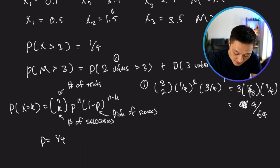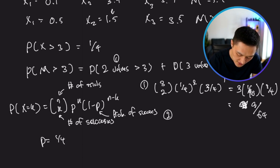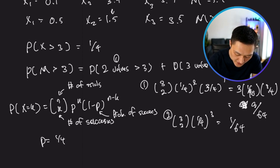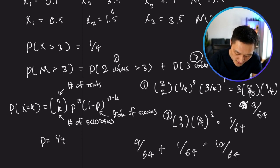For the second term, the probability of all three values being greater than 3 is C(3, 3) × (1/4)^3, and because there are no failure cases this is just 1 × (1/64) = 1/64. So all we need to do is take the sum: 9/64 + 1/64 = 10/64, which simplifies to 5/32.